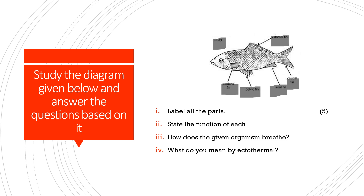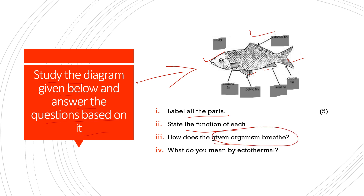Next is 'Study the Diagram and Answer the Questions.' I have covered the labeling parts — you need to label all the parts of the organism and state the function of each part. Then answer: how does the given organism breathe, and what do you mean by ectothermal? You have studied ectothermal and endothermal, so write accordingly. These all carry 5 marks each.